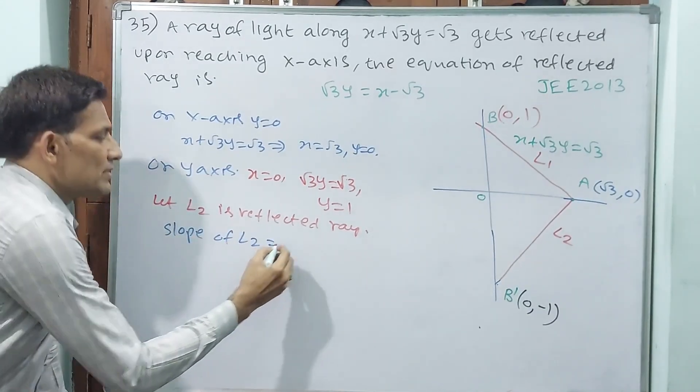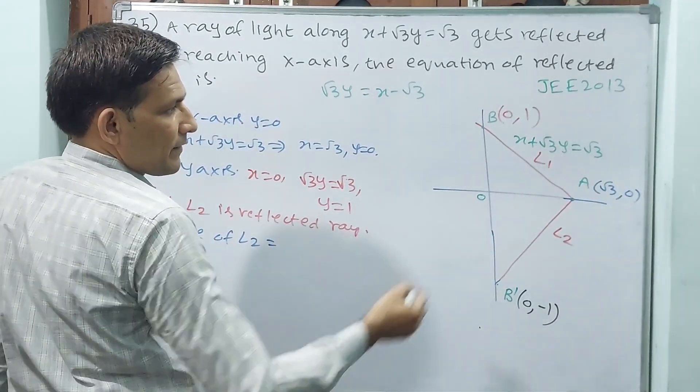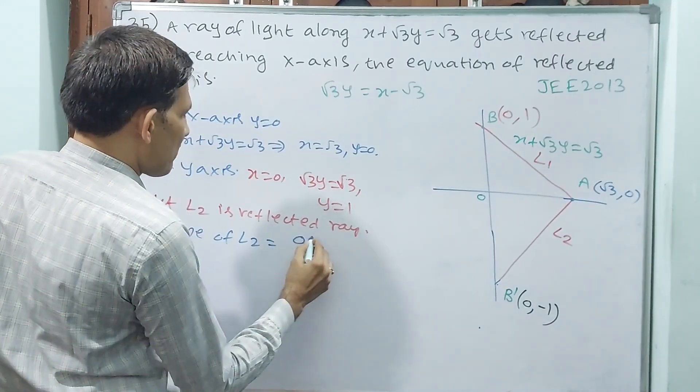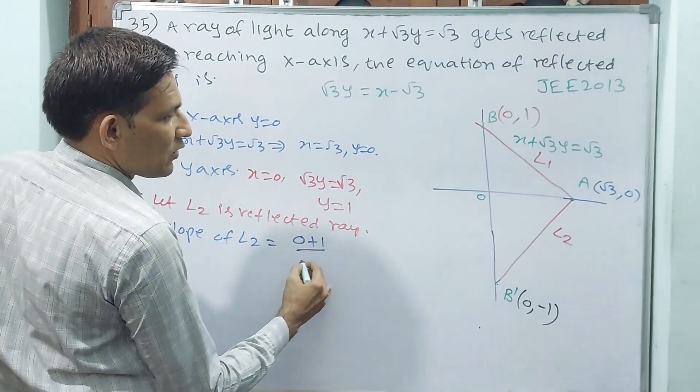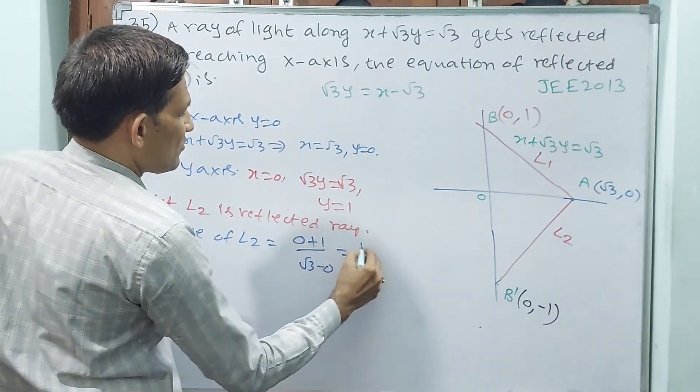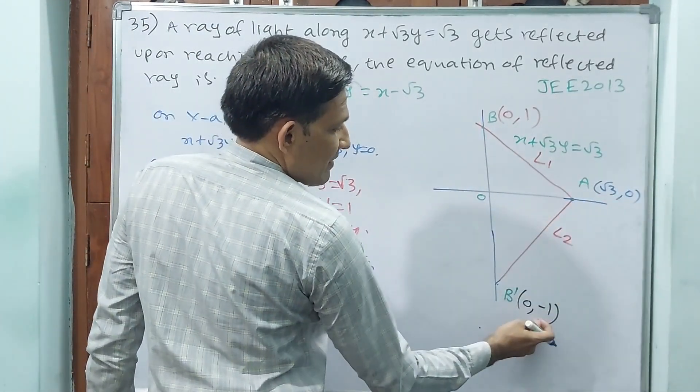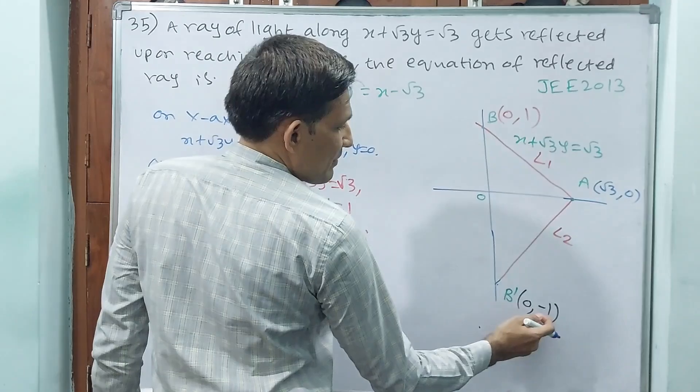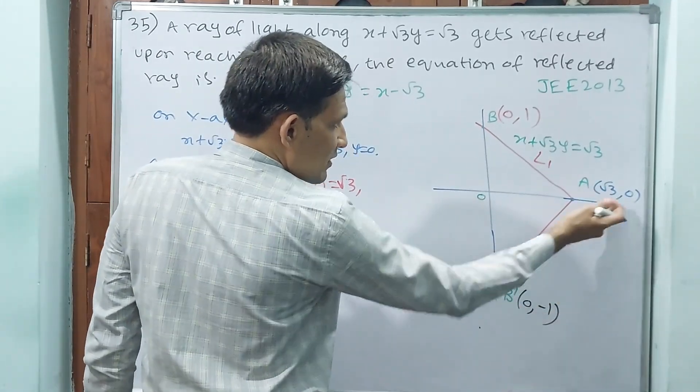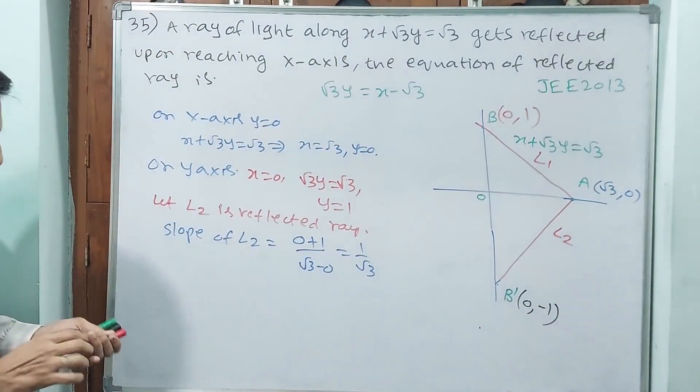Slope of L2 equals 0 minus minus 1, plus 1 by root 3 minus 0. That equals 1 by root 3. Y2 minus Y1, y plus is 0 minus minus 1, plus 1, root 3 minus 0 is root 3. 1 by root 3.